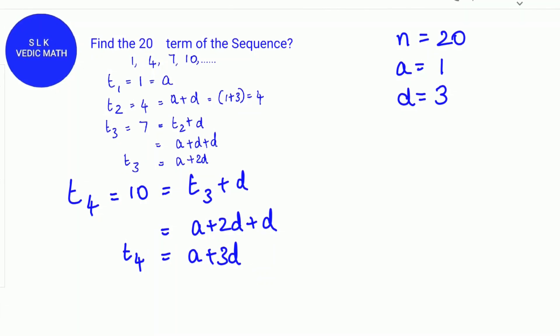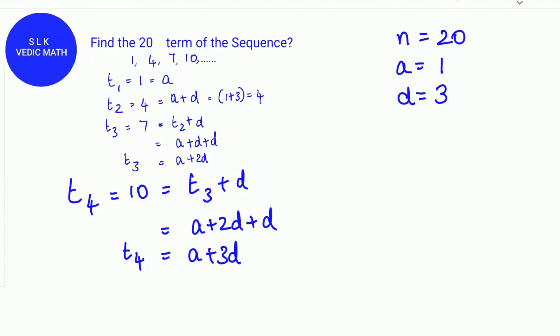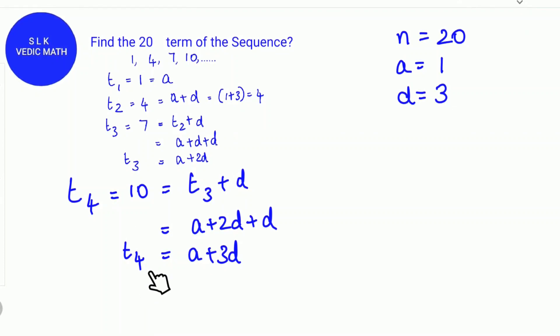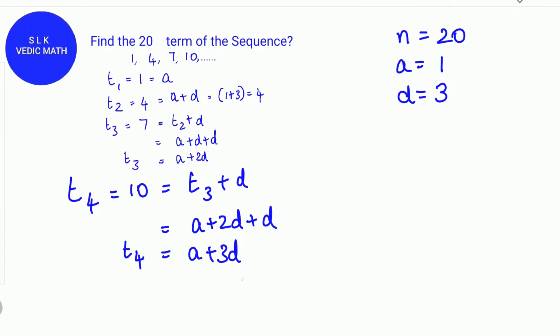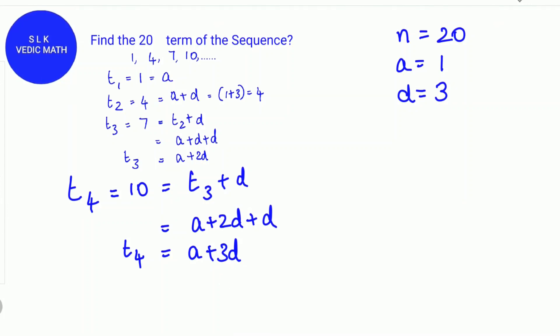Let's find what is common in all these terms to derive the formula. T4 is a plus 3d. When it is the fourth term, the difference d is multiplied 3 times and added with the first term a.